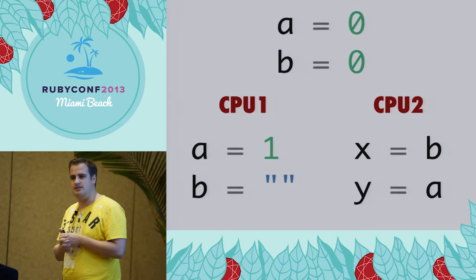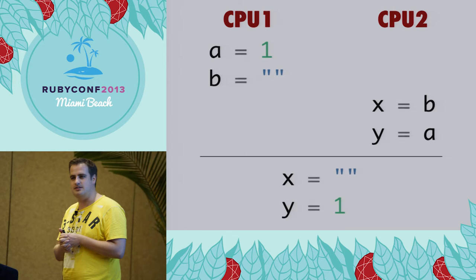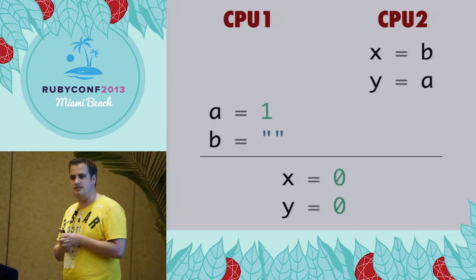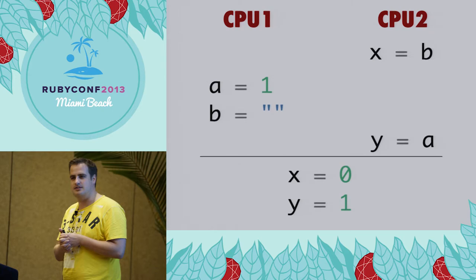Of course there's this: we first initialize A and B, then we copy the values to X and Y, and at the end X is the empty string and Y is one. Note that I swapped the order for the second case where we first load B and then load A. Another way this could happen is we copy the values first - this code gets run first - and then we end up running the other two, and at the end X and Y are both zero. There's also the possibility where X is zero and Y is one. So there are three possibilities if you reason about this logically.